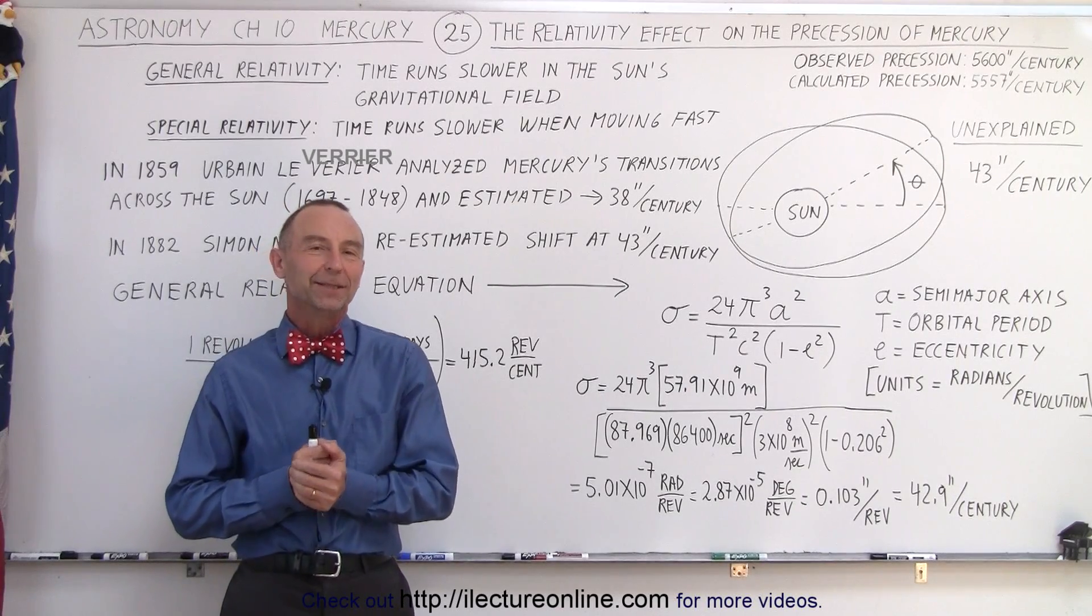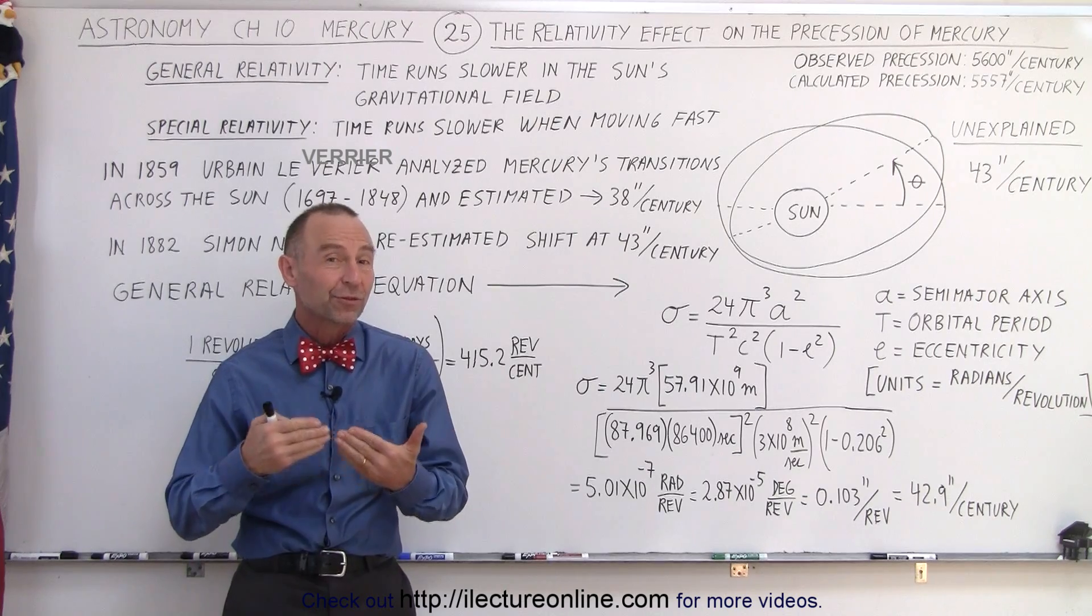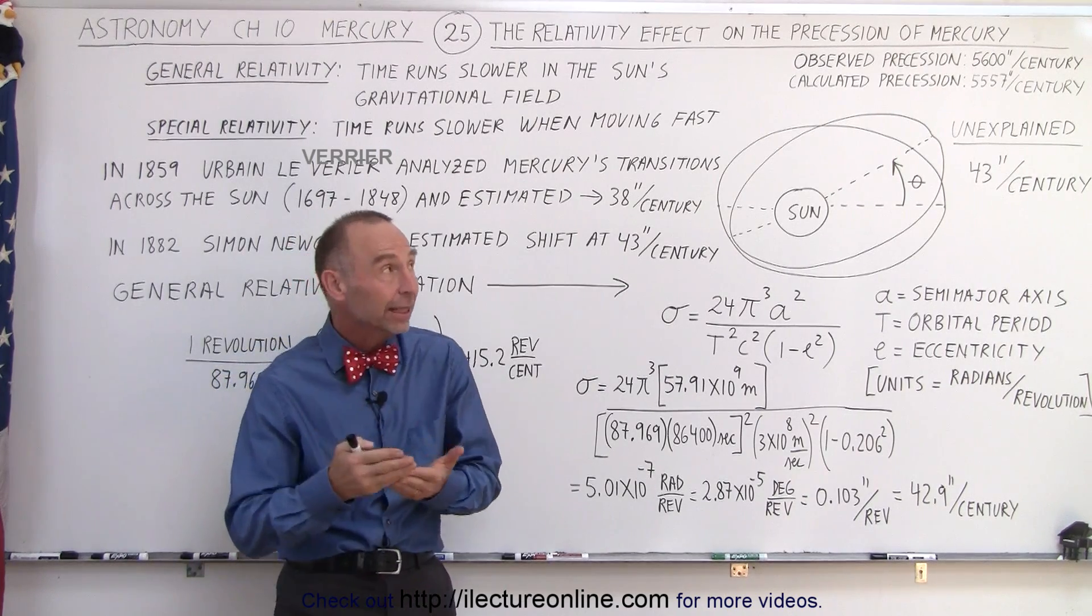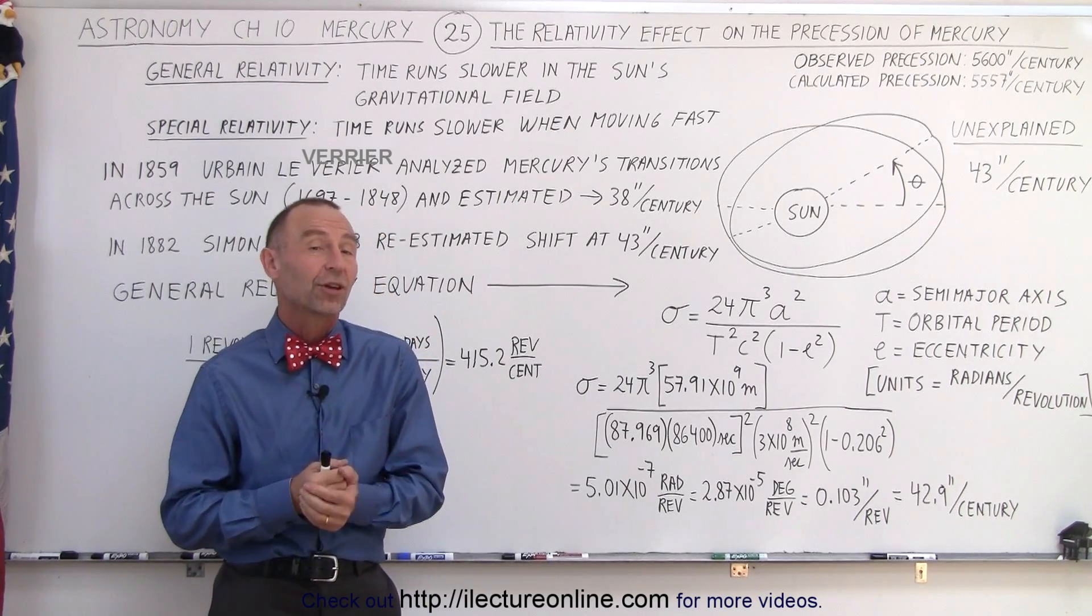Welcome to Electronline. In the previous video we saw how the precession of Mercury was very carefully observed and calculated to be about 5,600 arc seconds per century.